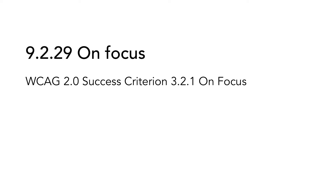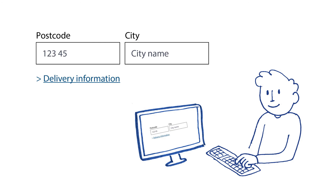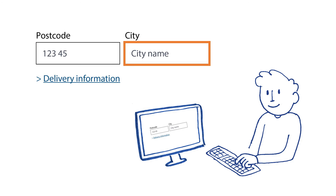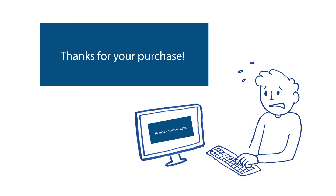9.2.29 On Focus is based on WCAG 2.0 Success Criterion 3.2.1 On Focus. The functionality of a website should be predictable, and focus as such must not trigger events. For example, when the user tabs to the next link or button, or when the user clicks in a text field or hovers over a link that has a mouseover script, forms should not be submitted automatically, new windows should not be opened, and the user should not be moved to another part of the page.